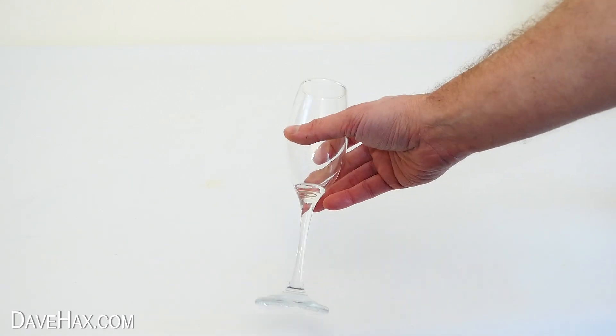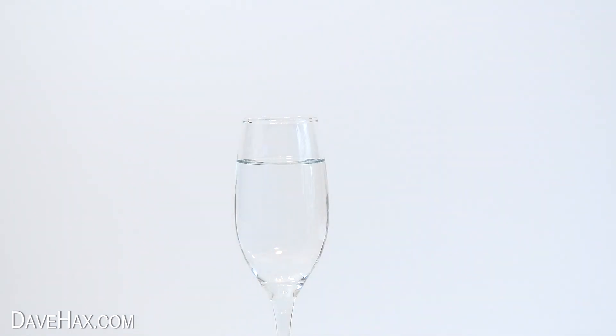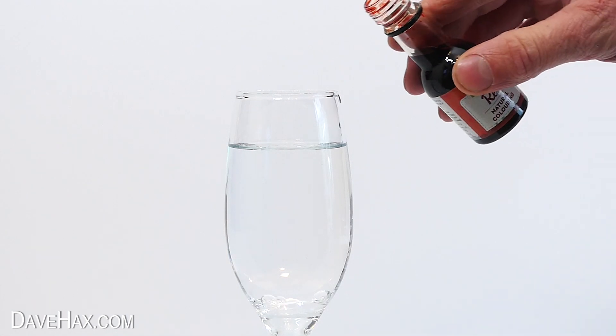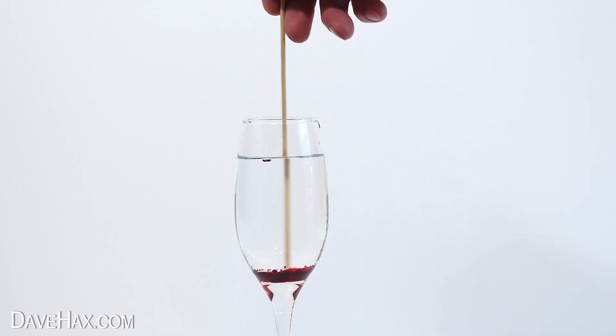For this one I'm using a champagne flute. Pouring in some baby oil and adding a splash of water which sinks to the bottom. I'm also adding a couple of drops of food colouring and then giving it a stir. This is going to be our DIY lava lamp in a glass.